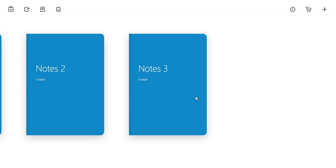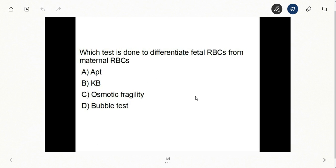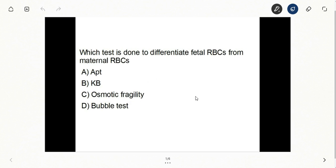There is this one particular question which I wanted to discuss, though the answer given in your books is correct. The explanation is not properly given. The question says which test is done to differentiate fetal RBCs from maternal RBCs. Now look at the question. You have to know what they're trying to ask. Probably it's a memory-based question, so it has not been put up properly.